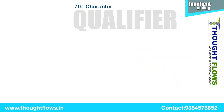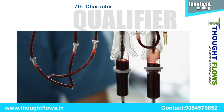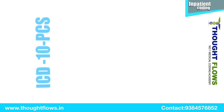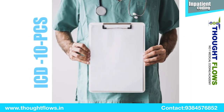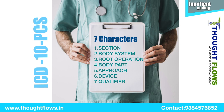The seventh character is Qualifier. For example, if the patient is having a transfusion of blood, we need to check whether it is autologous or allogeneic. So to summarize the core structure of IP coding, we need to check all seven characters: Section, Body System, Root Operation, Body Part, Approach, Device, and Qualifier.